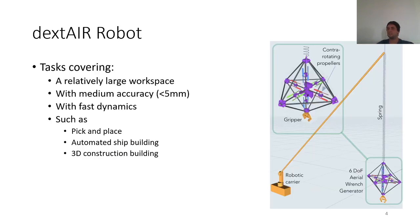The system we proposed is quite similar to this one. It's a Dexair robot. It consists of an omnidirectional aerial vehicle equipped with a gripper and is suspended by a low stiffness spring to a robotic carrier in order to move its equilibrium point. We propose this robot for tasks requiring a relatively large workspace with medium accuracy at most five millimeters and really fast dynamics. It can be used for tasks such as pick-and-place, automatic shipbuilding, 3D construction building, or cleaning or painting on building walls.